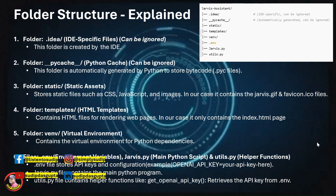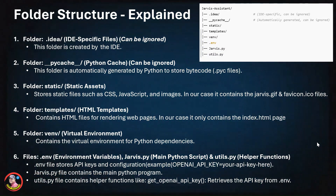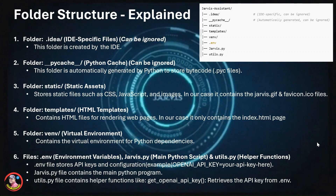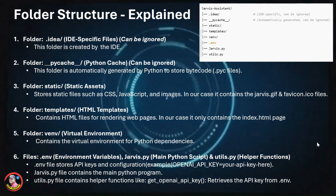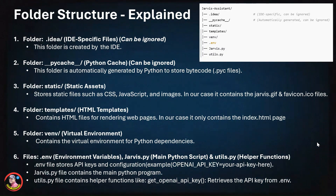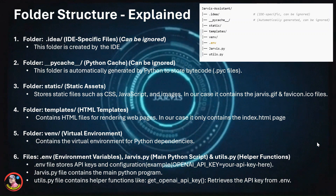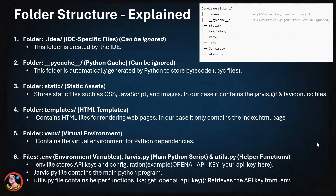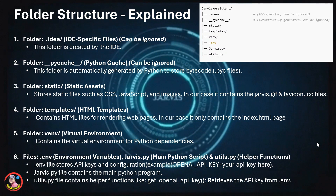Then comes the pycache folder — again it will be created automatically. It stores Python bytecode files, so your IDE should automatically create it. Then comes your static folder, which you need to create manually. It should contain your CSS, JavaScript, and images needed for this Jarvis personal assistant to run. Then comes your templates folder, which you also need to create manually — it will contain your HTML files used to render the web pages on which Jarvis will run. Then there is the virtual environment folder, which will be created automatically by your IDE and contains Python dependencies.